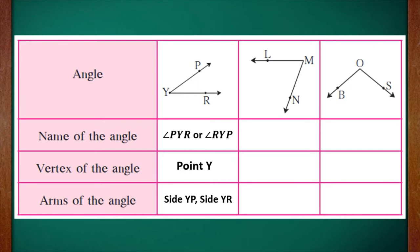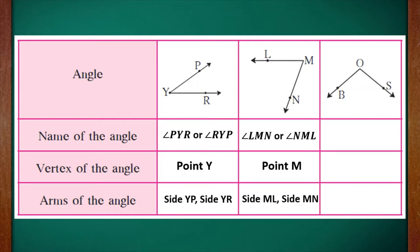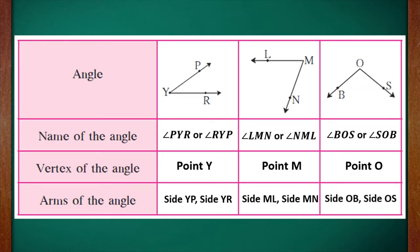If you observe the second angle LMN, the name of the angle can be written as angle LMN or angle NML. The symbol of angle should be written compulsorily — we cannot skip that. The vertex of the angle is point M, where the two sides meet. Arms of this angle are side ML and side MN. Similarly, for the third angle, it can be written as angle BOS or angle SOB. Vertex of this angle is point O and arms are side OB and side OS.